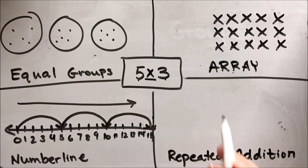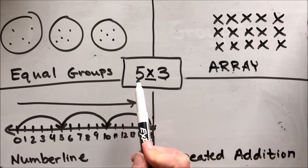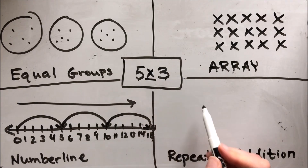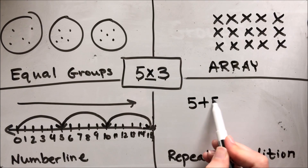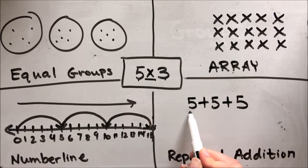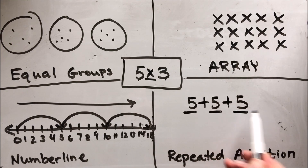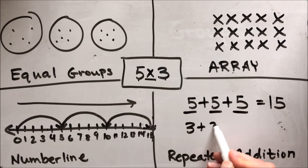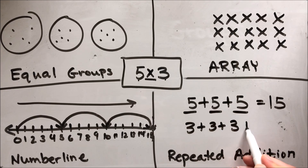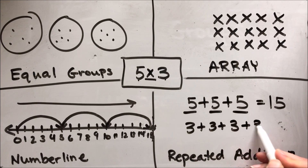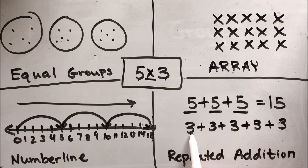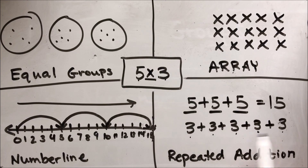The last thing is repeated addition. With repeated addition, I'm showing an addition fact I could use to solve five times three. I could do five plus five plus five, because that gives me three groups of five. Or I could do three plus three plus three plus three plus three, because that gives me five groups of three.